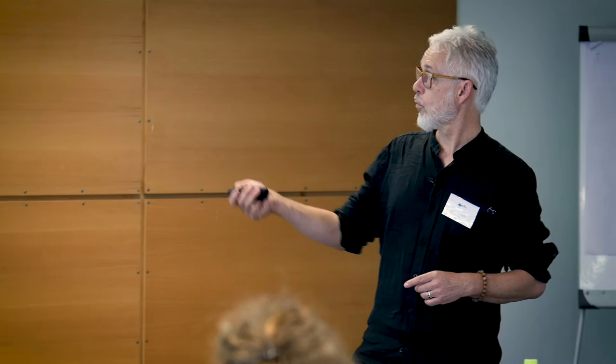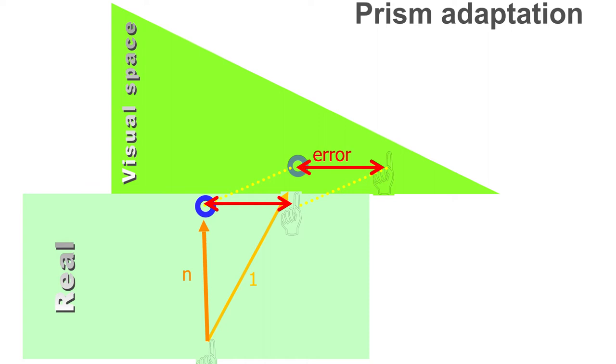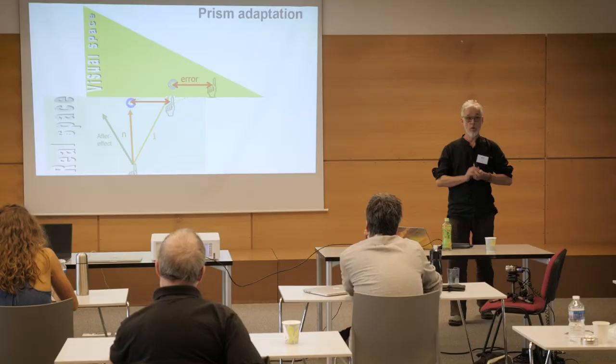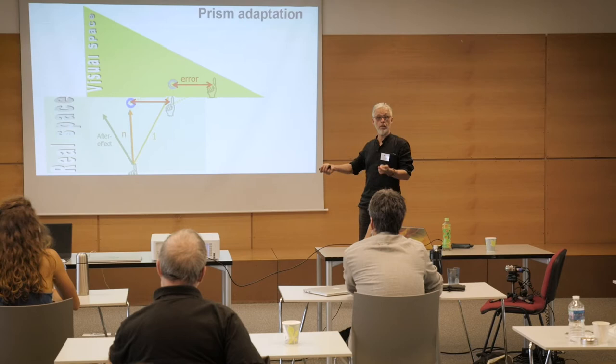The brain updates each movement proportional to the previous trial's error, so that after 50–80 trials subjects reach accurately. But when the prisms are removed, subjects reach in the opposite direction — demonstrating that unlike learning (where you can switch tasks), the normal behavior has been modified. Your brain is different after removing the perturbation. This is the demonstration of brain plasticity we call prism adaptation.